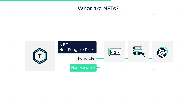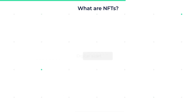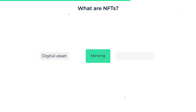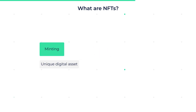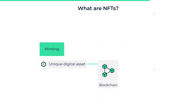Non-fungible means that an asset is unique within its asset class and cannot be exchanged for the same thing, because its properties make it unique. In other words, a digital asset that has been minted as an NFT becomes unique. Minting means that a digital asset has been assigned its unique token encryption. Its ownership data, along with its unique properties and entire digital file itself, is now stored on a blockchain.